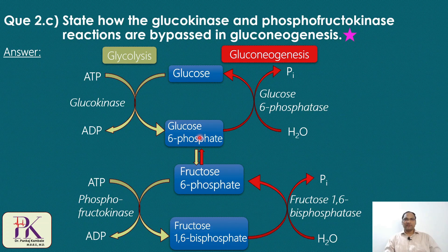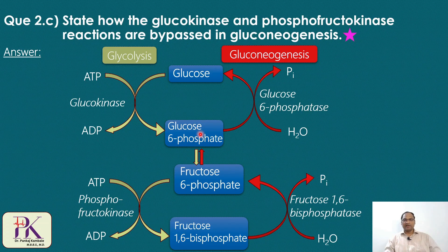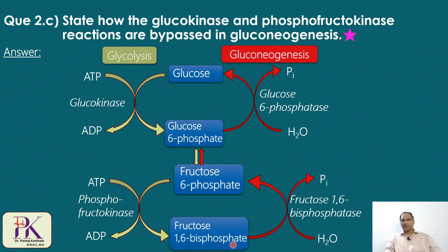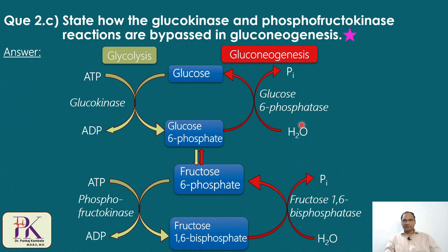In glycolysis, glucose is converted to glucose-6-phosphate by the glucokinase enzyme in an irreversible reaction. In gluconeogenesis, this is bypassed using glucose-6-phosphatase, which converts glucose-6-phosphate back to glucose. The next step — conversion of fructose-6-phosphate to fructose-1,6-bisphosphate by phosphofructokinase — is bypassed in gluconeogenesis by fructose-1,6-bisphosphatase, which converts fructose-1,6-bisphosphate back to fructose-6-phosphate. It is always better to write the pathway, as it clearly explains the answer.